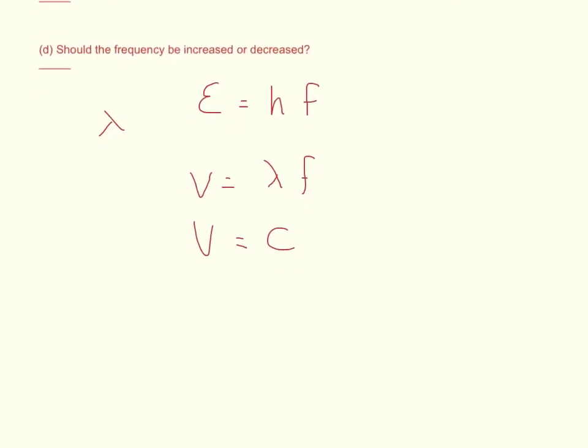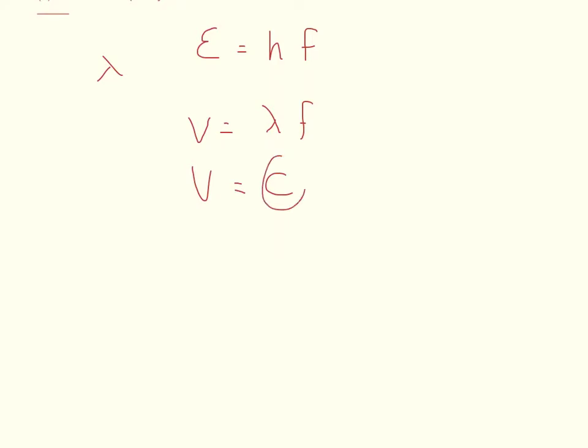So what we'll have to do is we'll have to substitute in c into this equation. So c is equal to the wavelength times the frequency of the photon. But our equation for Einstein's equation for energy, energy is equal to Planck's constant times the frequency. We don't know what the frequency is, so we're going to isolate it.